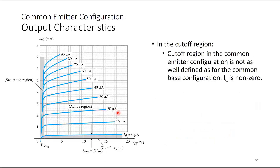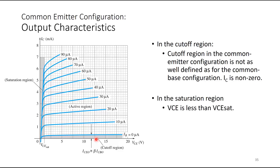In the cutoff region, the common emitter configuration is also not as well defined as for common base. IC here is non-zero — it is a fairly notable value, unlike common base where it was almost zero. In the saturation region, VCE is less than VCE_sat. If we operate amplifiers in the saturation region, the output would not be linear, and any signal handled would be distorted.